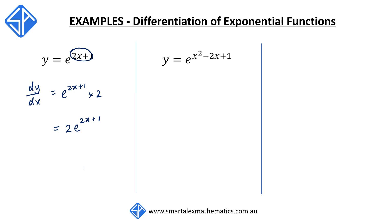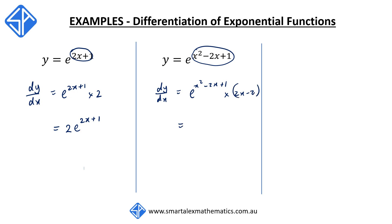Our next example is y is equal to e to the x squared minus 2x plus 1. When we differentiate this, everything stays the same, but we need to multiply by the derivative of x squared minus 2x plus 1, which is 2x minus 2. So dy/dx will be equal to (2x minus 2) times e to the x squared minus 2x plus 1.